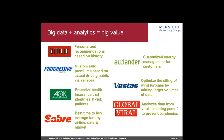Adding big data to analytics gives you exponential value in terms of the possibilities. These are very accessible examples. Netflix with its personalized recommendations based on history. Progressive with custom auto premiums based on actual driving habits via sensors. You see examples from insurance, healthcare, and manufacturing — like Festus optimizing the siting of wind turbines by mining larger volumes of data. If we're not optimizing these things, our competitors surely are, and that will make or break us as companies. So we do want to be sure that we're optimizing, not just winging it.